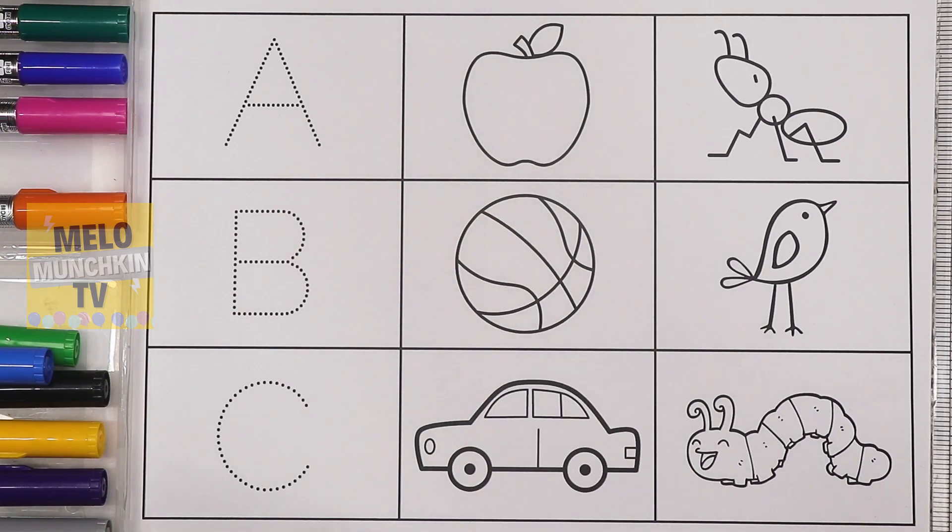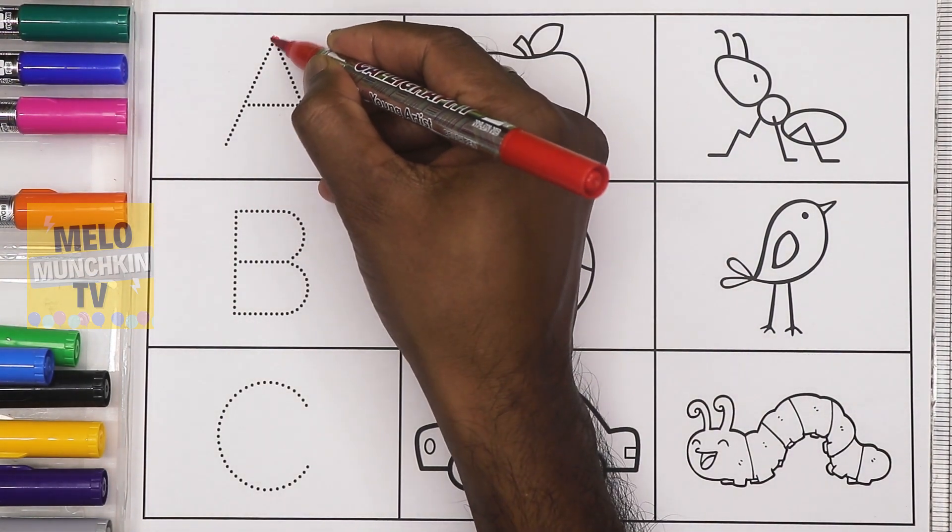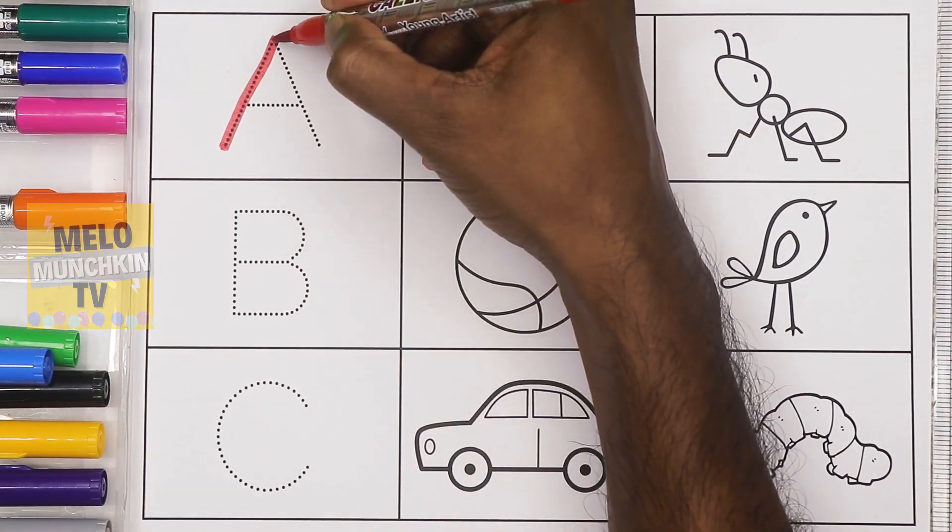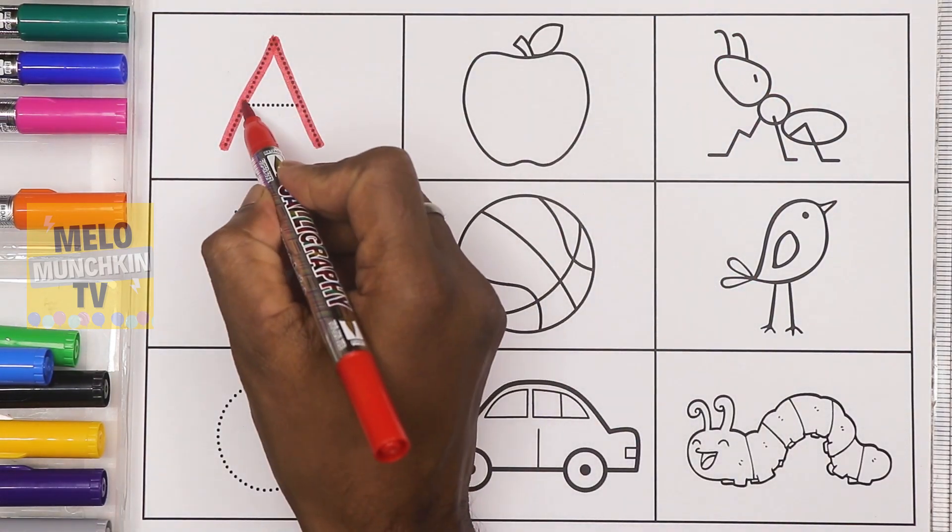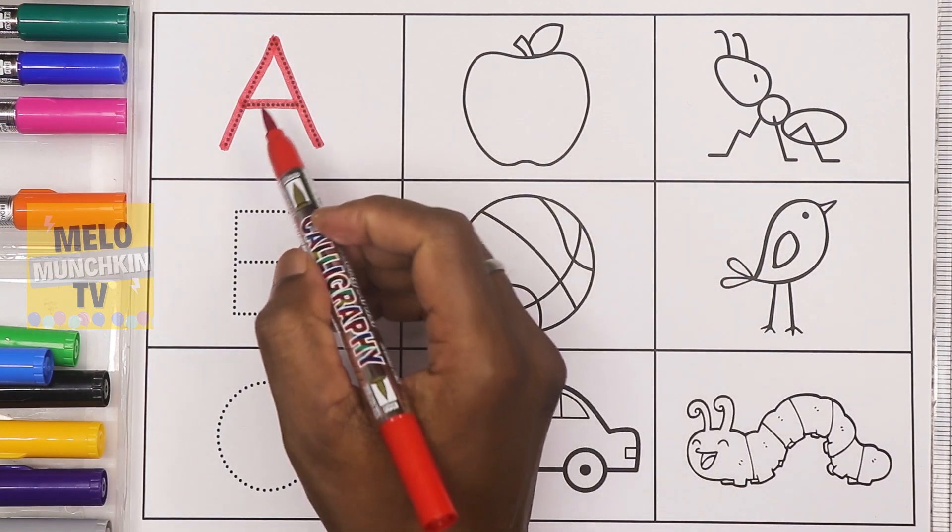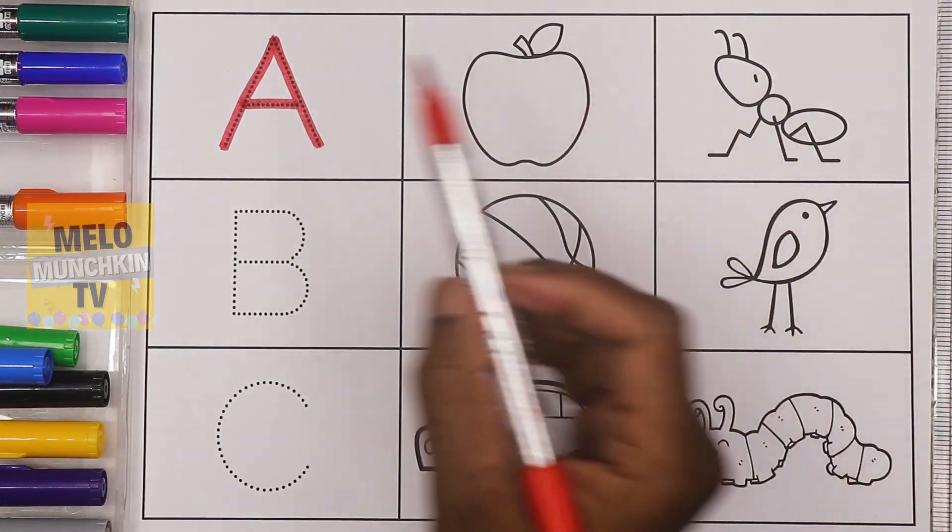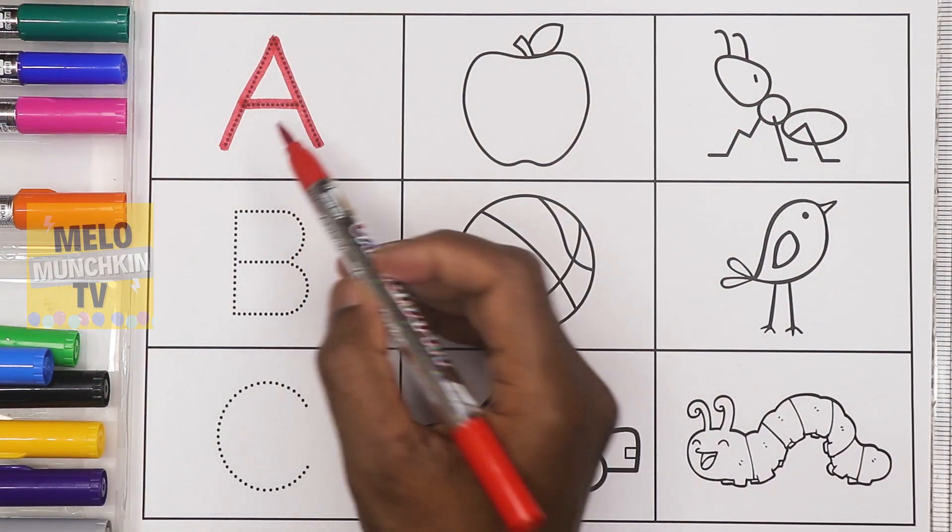Red color. This is letter A. A for apple. A for ant. This is letter A. A for apple.